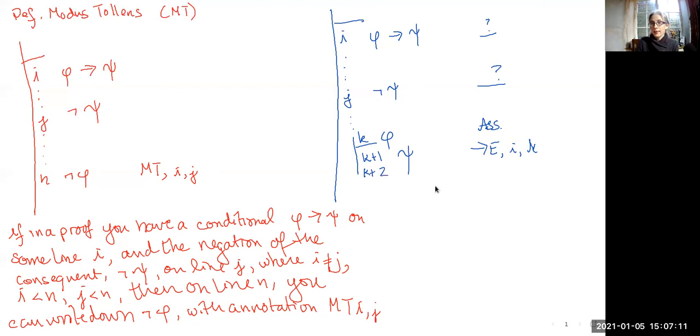Then at line k plus 2, I'm just going to go up to my not psi here at line j and reiterate it. And now you can see from the assumption of phi, I was able to get a contradiction between psi and not psi, which means that I can close that sub proof on line k plus 3, I can conclude not phi through negation introduction, citing the sub proof from k to k plus 2.